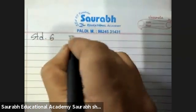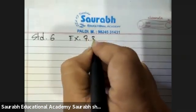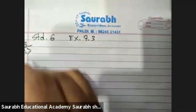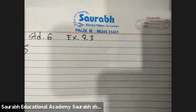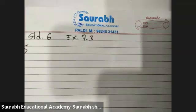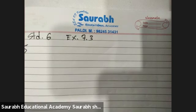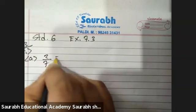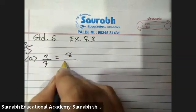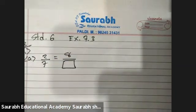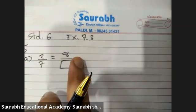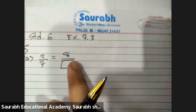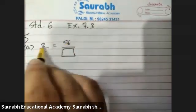Standard 6, Exercise 7.3, Sum Number 3. First, replace blank in each of the following by the correct number. We have to find the equivalent number, and that equivalent number will be how we will get.